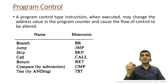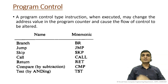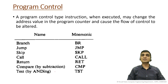Some of the program control instructions are: branch, jump, skip, call, return, compare, and test. Compare and test are not completely branch instructions, but they are used with branch instructions. Compare subtracts two operands and based on that sets some of the flag bits. Test performs the AND operation between two operands, and then you can use the complete branch or program control instruction.